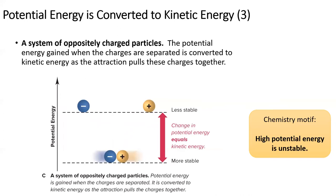As we saw with ionic compounds, opposite charges attract. This means that when oppositely charged particles are separated, they contain more potential energy and are less stable. As they accelerate toward each other, this potential energy is converted to kinetic energy.